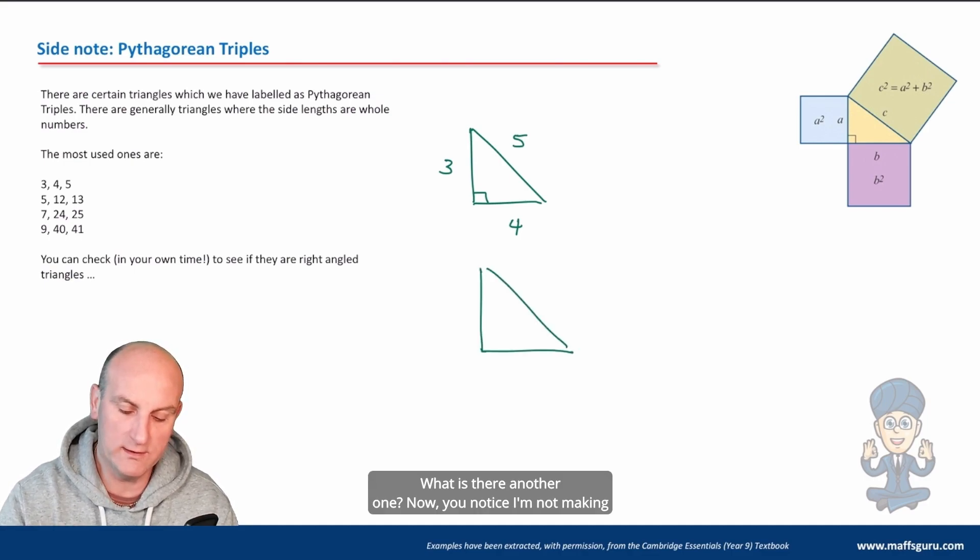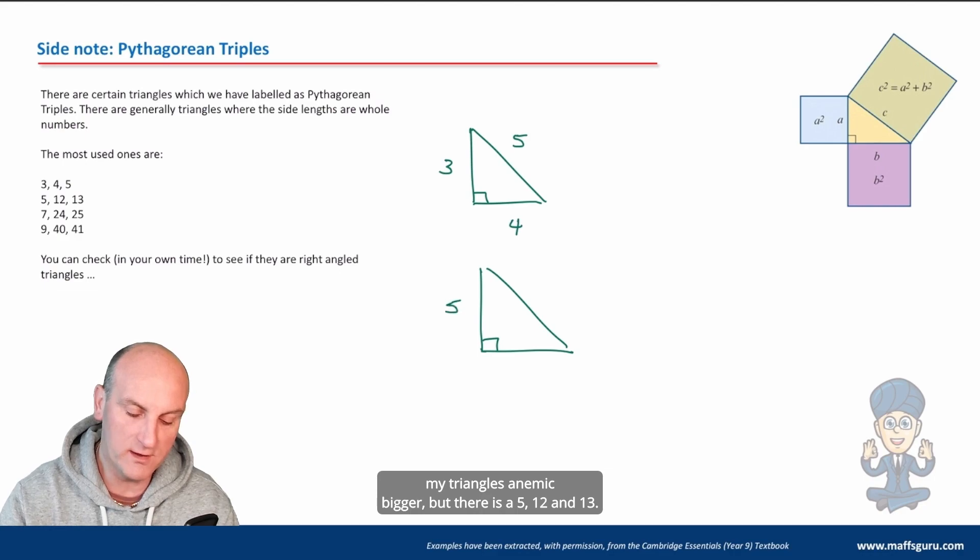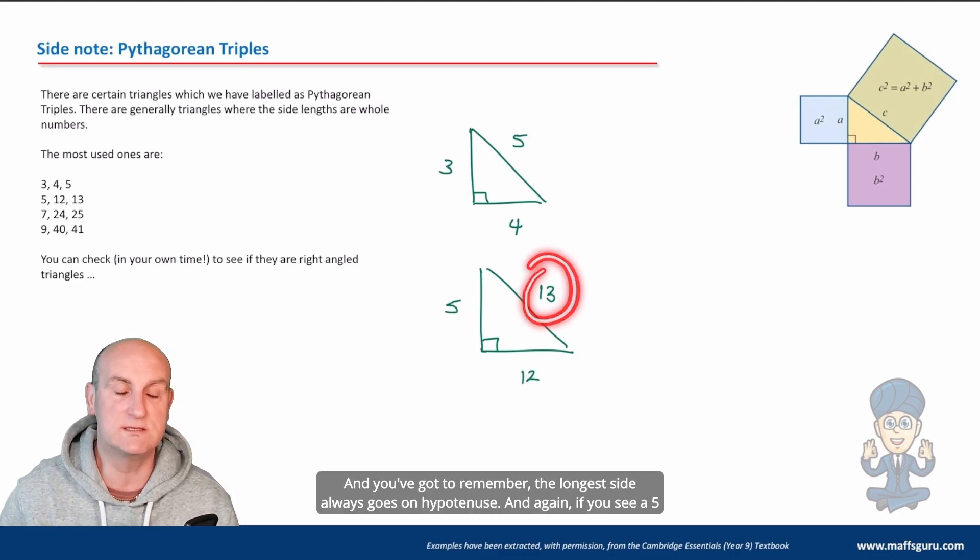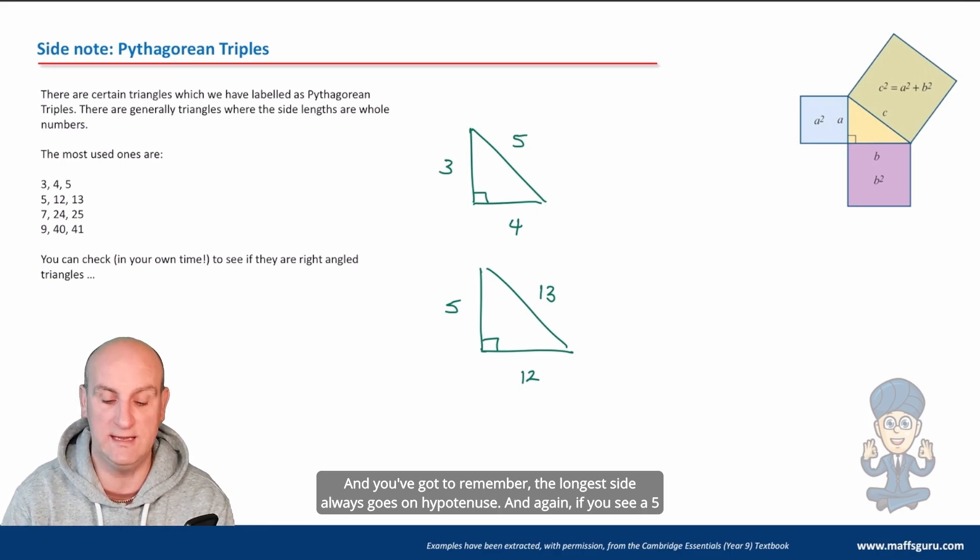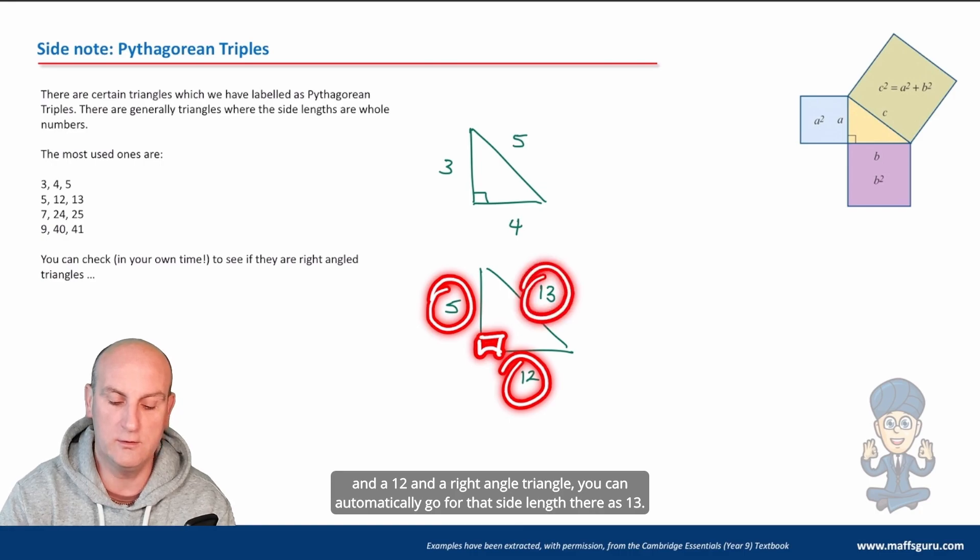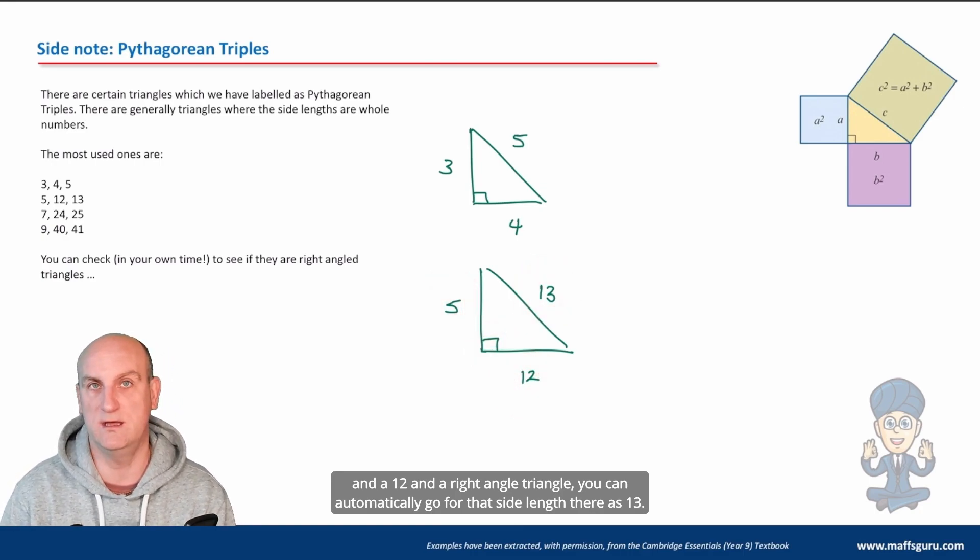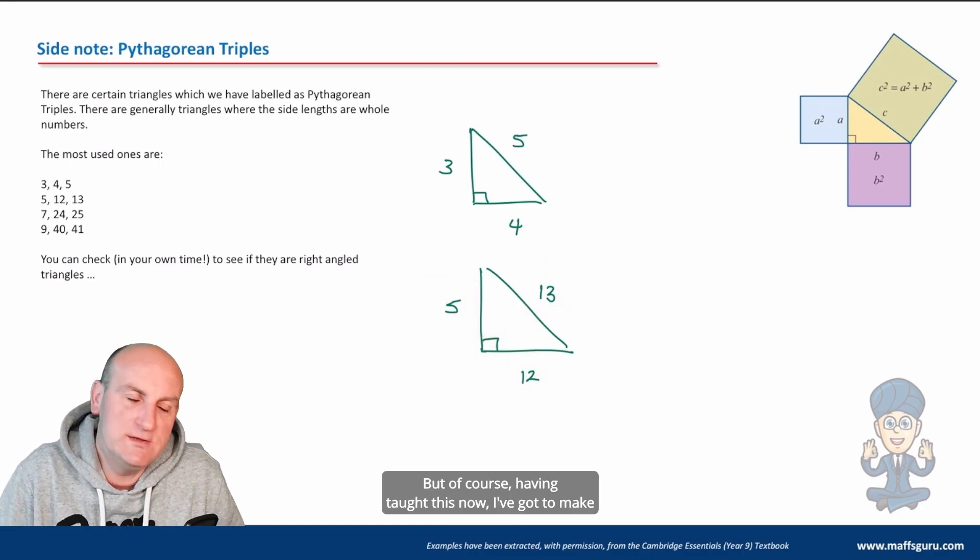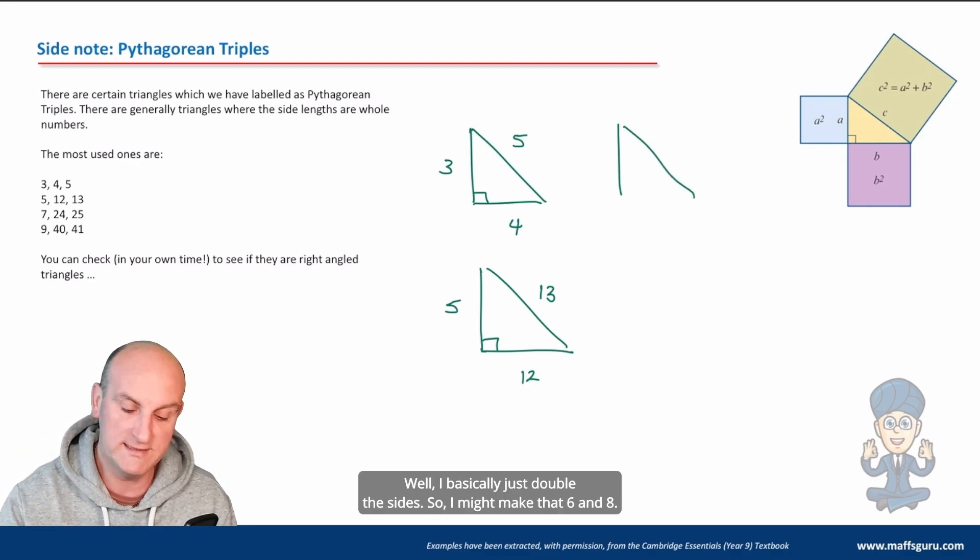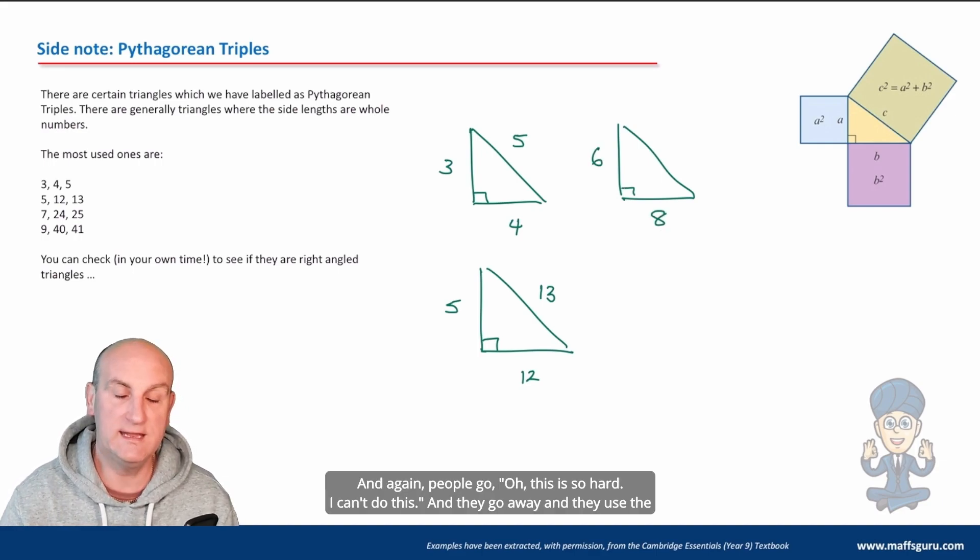What, is there another one? Now you notice I'm not making my triangles any bigger, but there is a 5, 12 and 13. And you've got to remember the longest side always goes on the hypotenuse. If you see a 5 and a 12 and a right angle triangle, you can automatically go for that side length as 13. But of course, having taught this now, I've got to make it even trickier for you. So how do I do that? Well, I basically just double the sides.